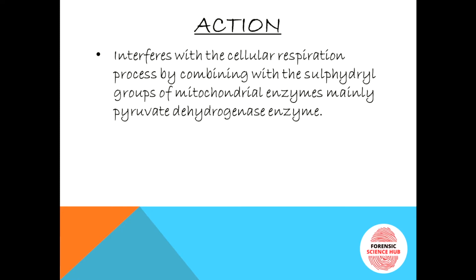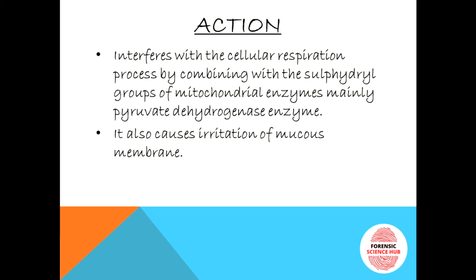Now, the mechanism of action — how arsenic works when it enters our body. It interferes with the cellular respiration process. There is an enzyme called pyruvate dehydrogenase, a mitochondrial enzyme responsible for converting pyruvate into acetyl coenzyme A. Arsenic binds with the sulfide groups of this enzyme, so the reaction doesn't occur, and that's how it interferes with cellular respiration.